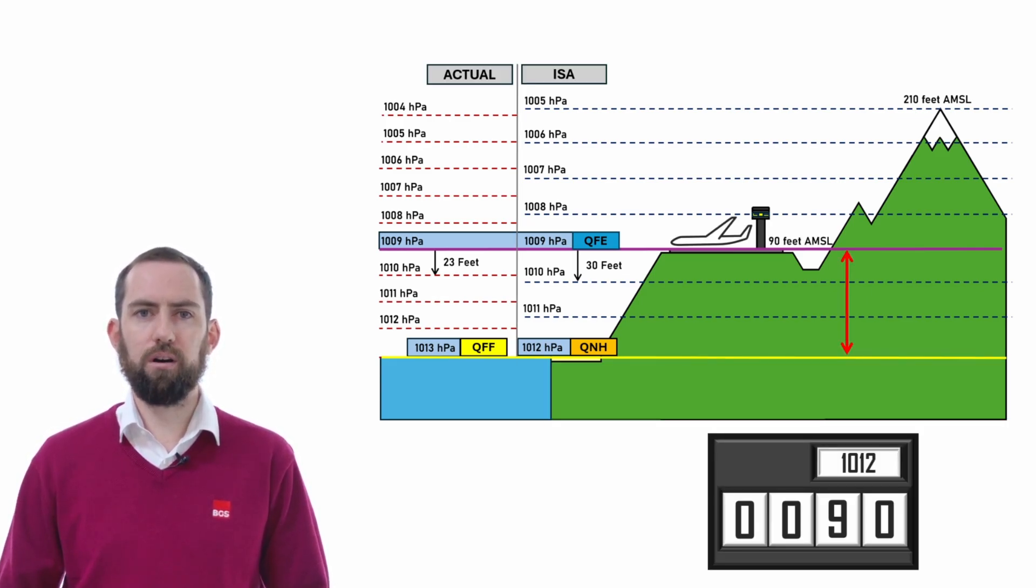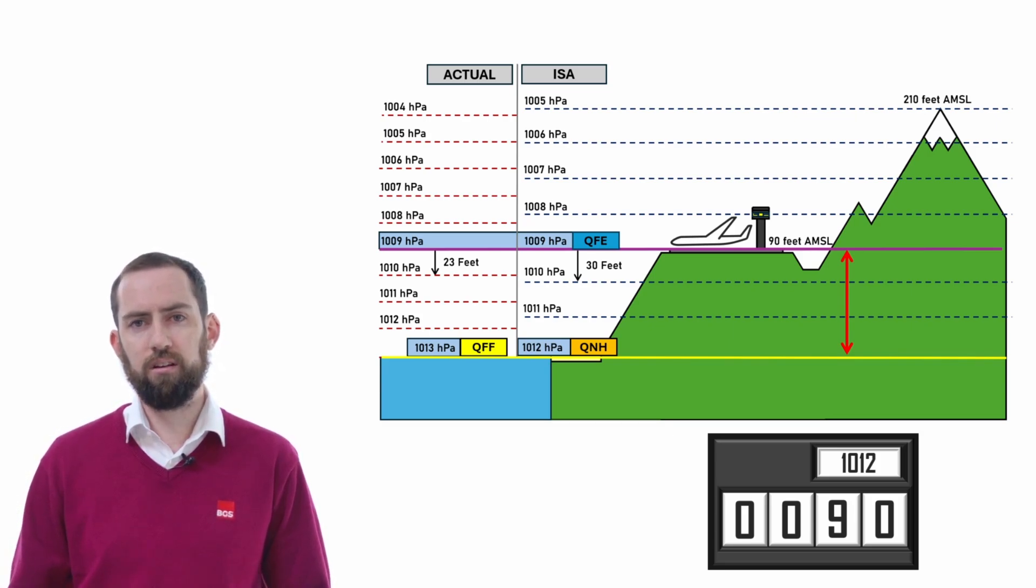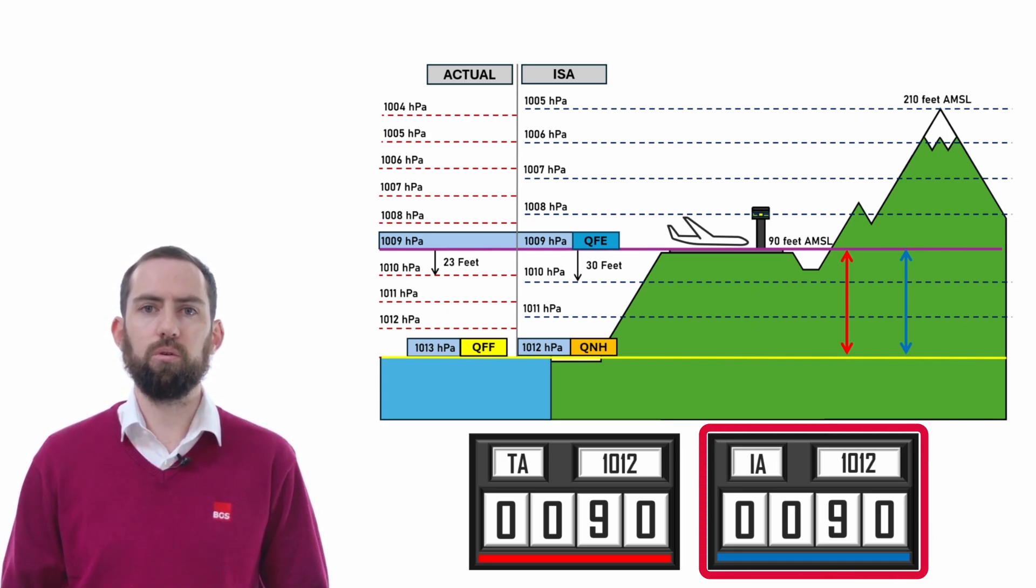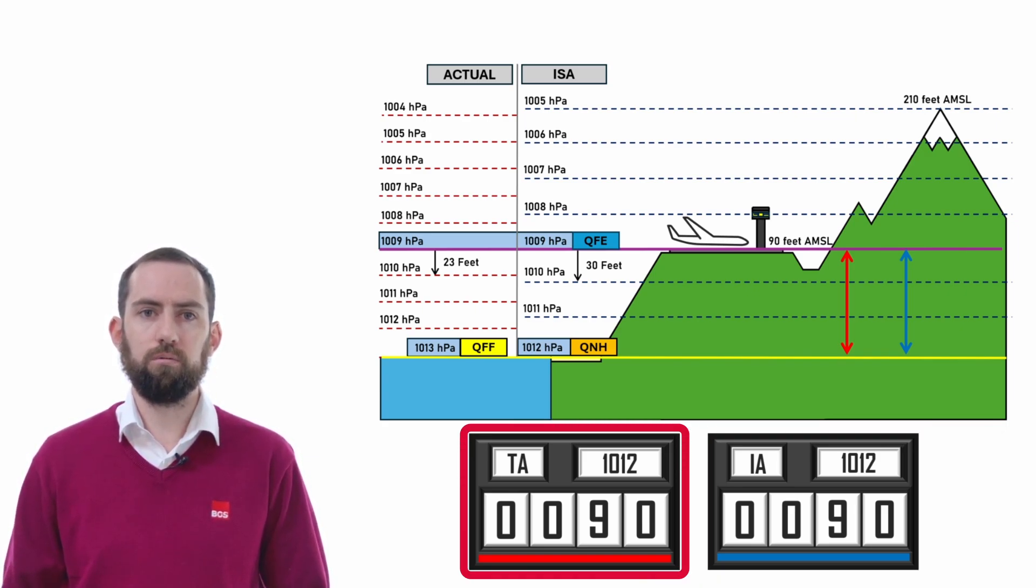Now here we have an aircraft parked at the airfield with the QNH of 1012 set on the altimeter. The altimeter is reflecting 90 feet as the difference between the QNH and the QFE is 3 hectopascals using 30 feet per hectopascal. This is where things become slightly complicated because I am going to include another altimeter reading. The top box is showing indicated altitude, which is what the pilot will be seeing on the flight deck. The second box will be showing true altitude, which will be the altitude that the aircraft is actually at.